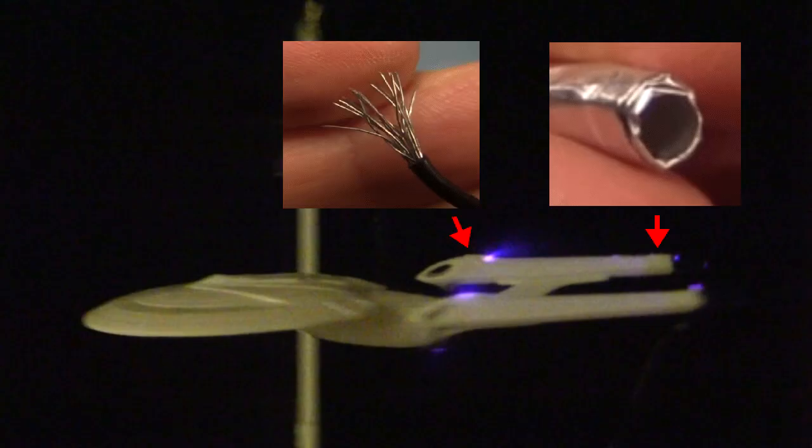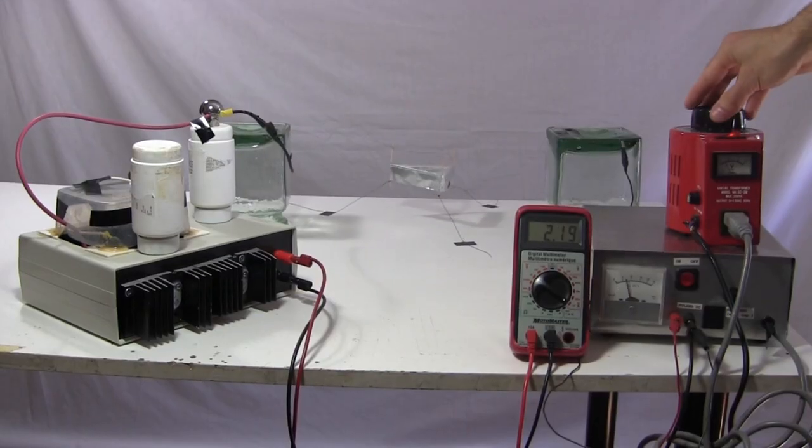You can see that in the Enterprise model, where the smooth aluminum cylinder is at this end of the nacelle and the sharp ended wires are at this end. The Enterprise moves in this direction, the direction of the sharp ended wires. The same applies to the lifter. The smooth topped aluminum foil is here and the sharp thin wire is here. The lifter moves up in the direction of the sharp thin wire.